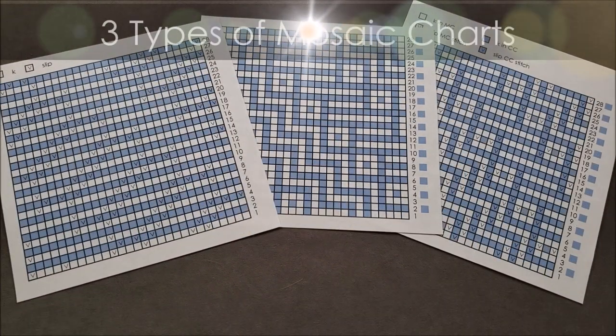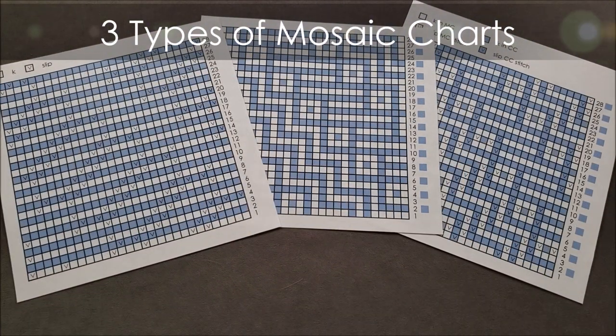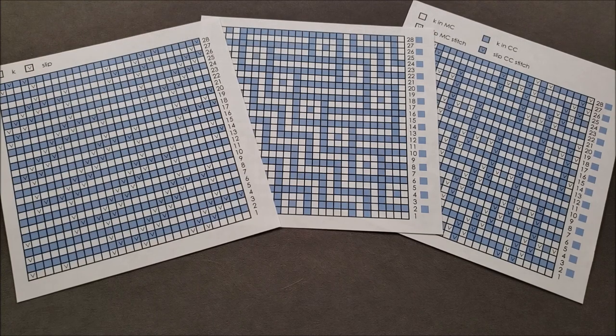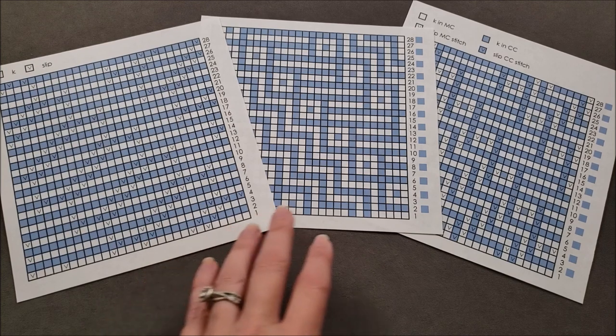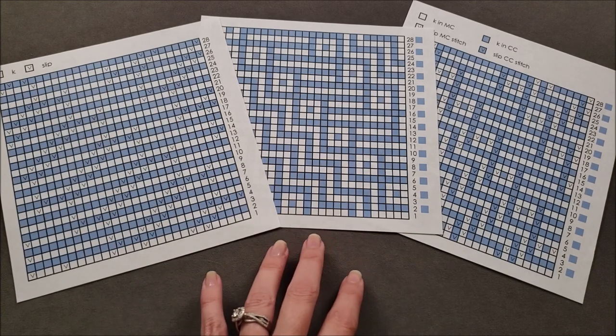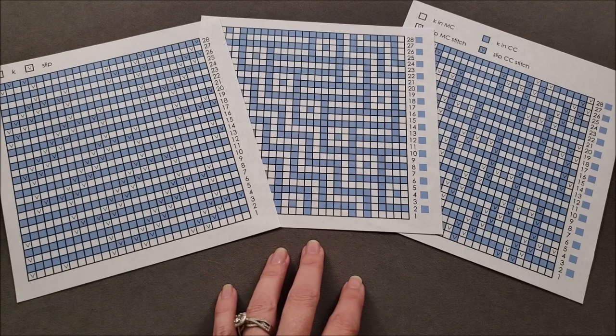Mosaic patterns are usually presented as color charts. However, the same stitch pattern can be charted in a variety of ways. These three charts may look different, but they all accurately represent the design that I'm using for my sock.